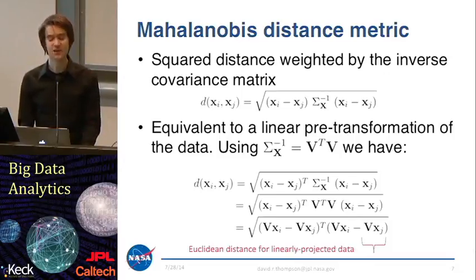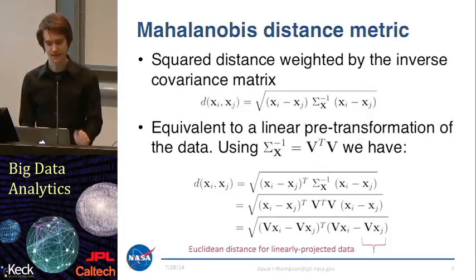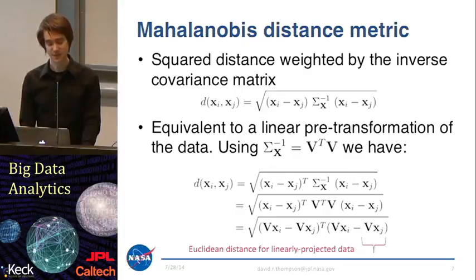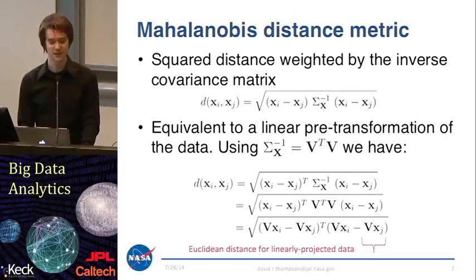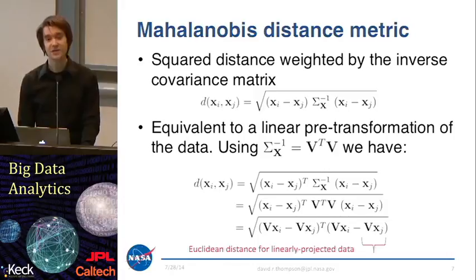One can easily show that this expression is actually equivalent to a linear pre-transformation of the data. We define this matrix sigma as V-transpose V, push it through some algebra, and reveal that it's actually equivalent to pre-multiplying all of our data by a new basis V. So to calculate a Mahalanobis distance, we can just take some linear transformation of the data and then apply our Euclidean distance in that space — it's the same as the Mahalanobis distance metric. Note that you can calculate this decomposition for any positive semi-definite matrix. There's a natural relationship between the Mahalanobis distance metric and the linear dimensionality reduction strategies we've explored in previous lectures.